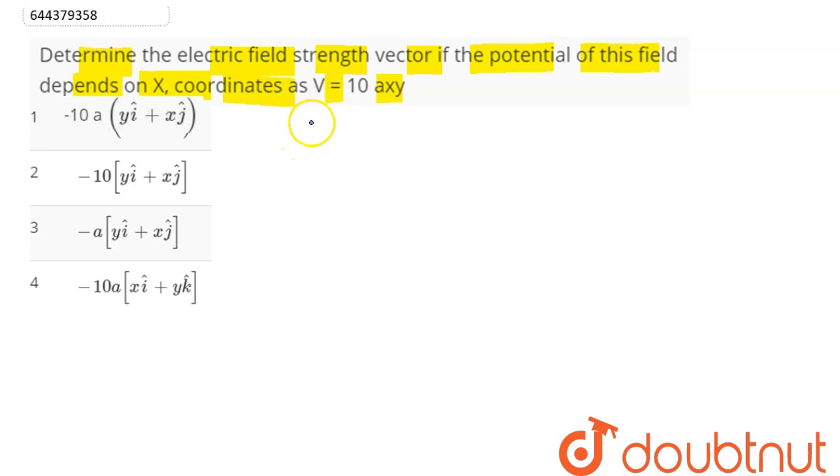Now here, we know electric field is given as minus of dV by dr which has two components, i cap and j cap.